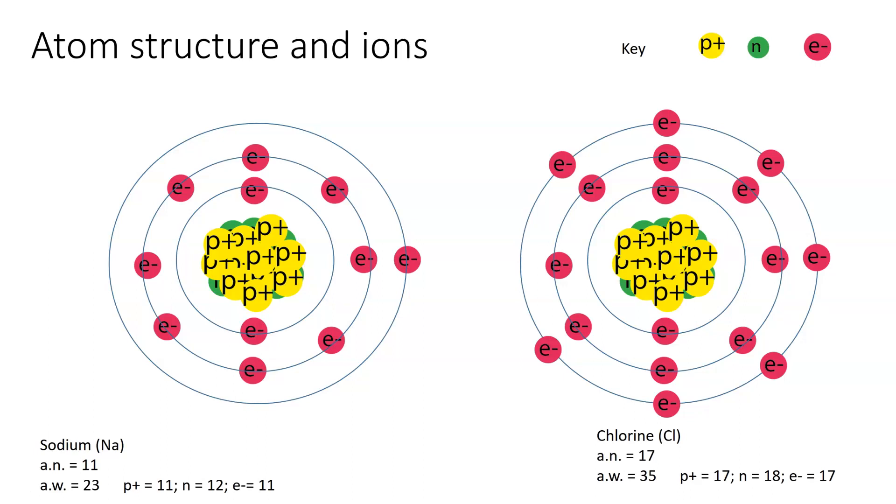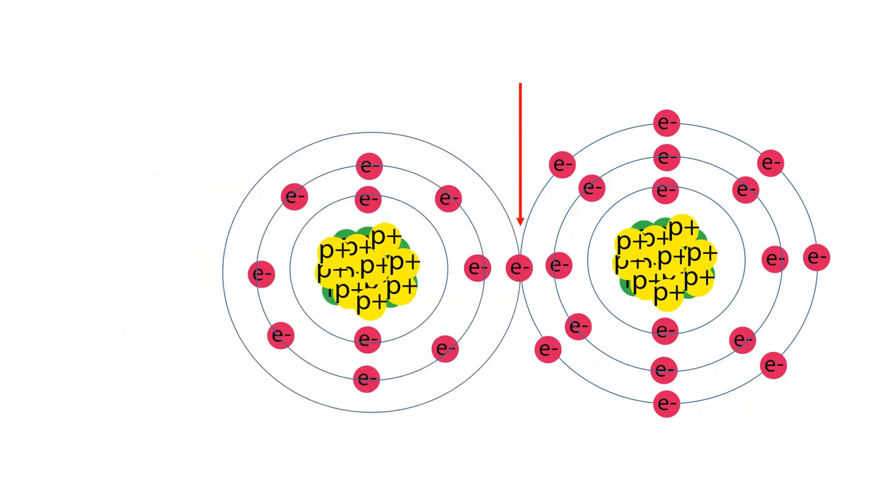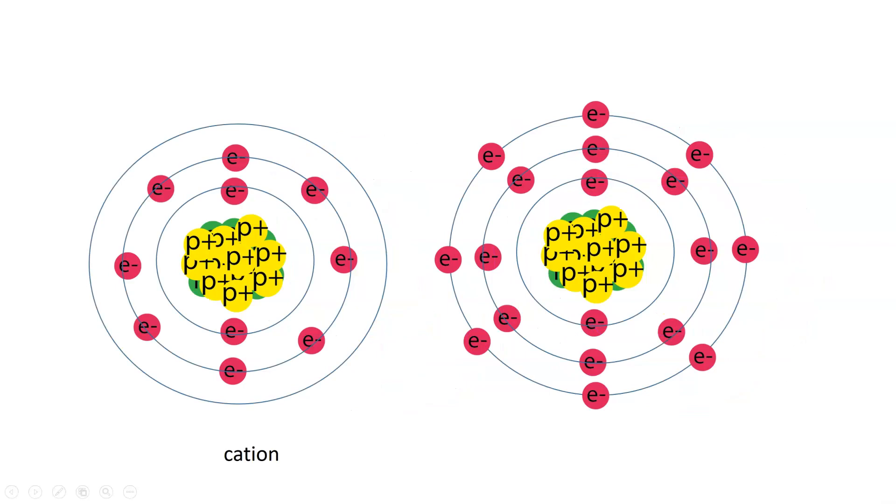The outer shells are filled when you have eight electrons in them. Notice the sodium has one extra one. The chlorine has seven, which means it's deficient of one. Next thing we get is these two molecules come together. They share an electron. We call that a covalent bond. If you place this in water, they separate.